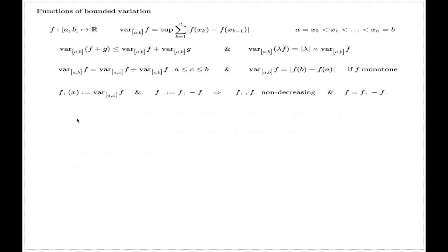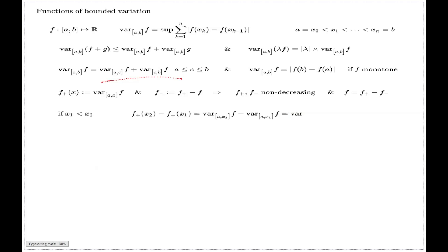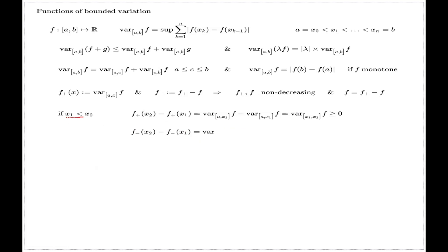The argument that F+ is non-decreasing goes as follows: fix two points x1 and x2 with x1 less than x2. The difference F+(x2) − F+(x1) is the difference of the corresponding variations, which by the additivity property of variation reduces to the variation over the segment from x1 to x2 — a non-negative quantity. For F−, the difference F−(x2) − F−(x1) reduces similarly: since x2 and x1 together produce a partition of that interval, and variation is a supremum over all partitions, the variation is larger than the bracket involving F(x2) − F(x1), and again you end up with a non-negative quantity.